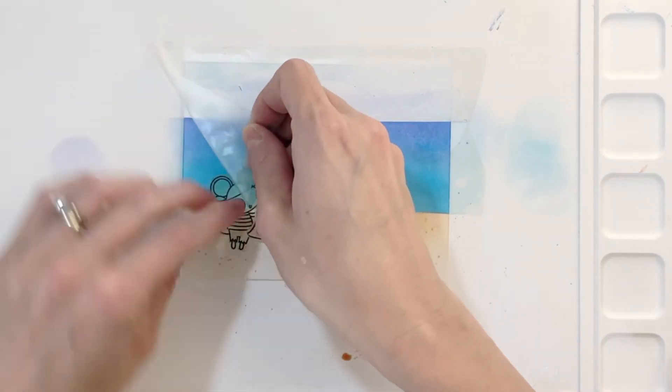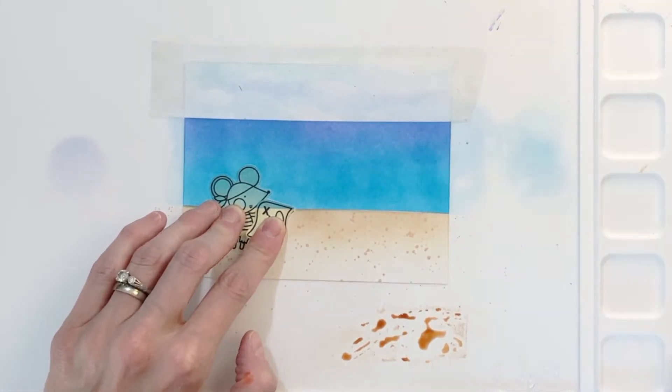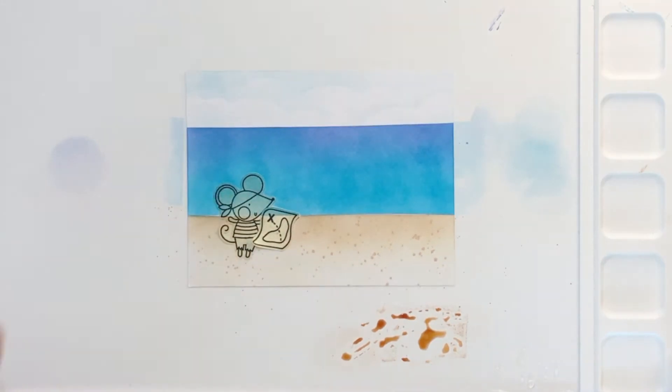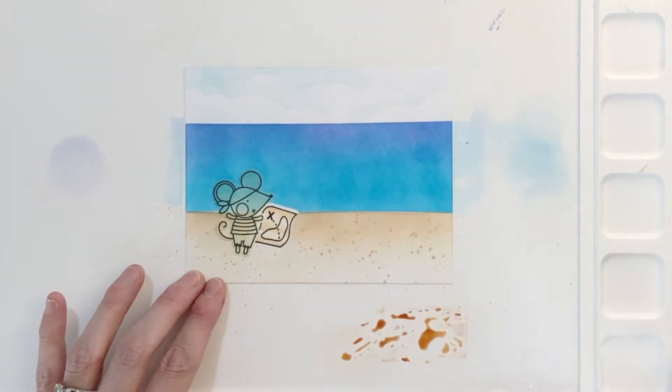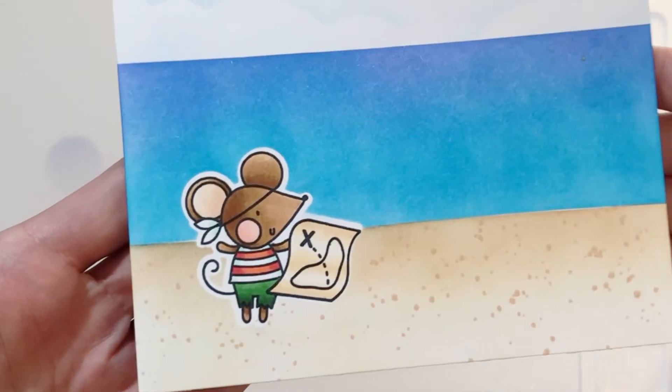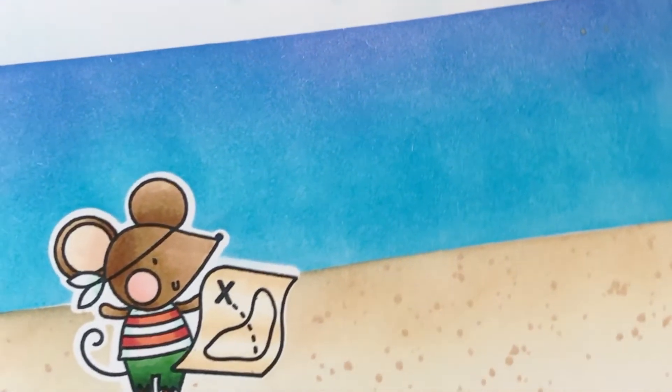Just want to make sure that you cover up your areas that you've already ink blended, otherwise you're going to get ink everywhere. So I did keep my masks on and then I decided for further protection I grabbed a piece of white cardstock to kind of protect it as well. Once I finish those little splatters I can remove all the masks and my background panel is done.